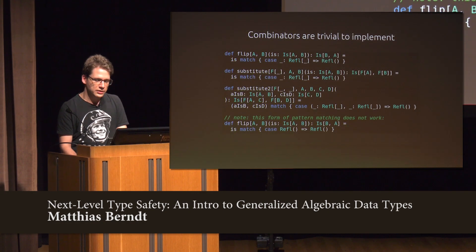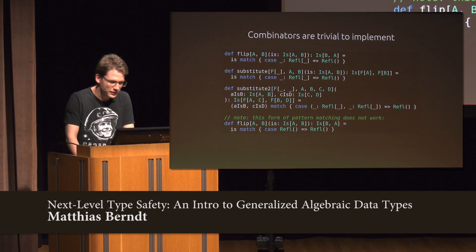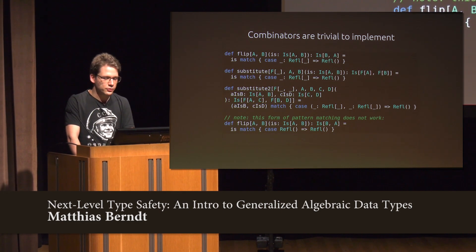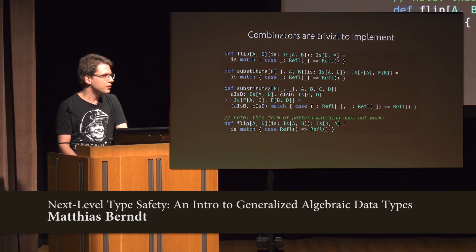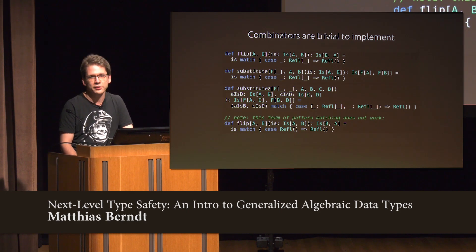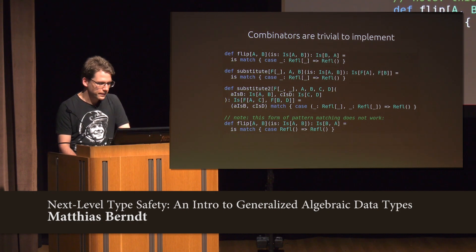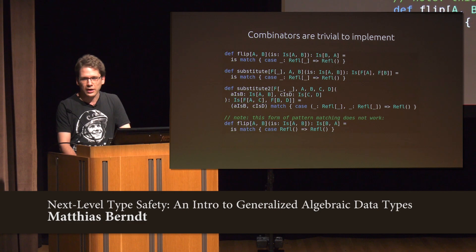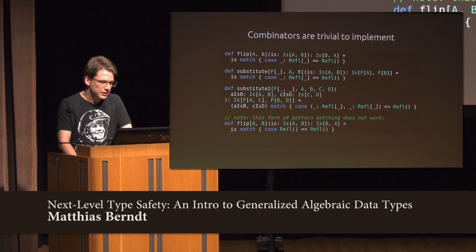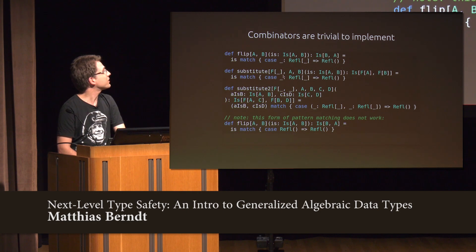Now we can implement all the combinators I mentioned earlier. I can implement 'flip': if A is B, then B is A. I can implement 'substitute': if A and B are the same, then F of A and F of B are the same. There's also a third variant that works the same as substitute but for binary type constructors. One warning: if you want to try this yourself, watch out for the syntax at the bottom — I believe that is a Scala compiler bug. You always have to use the pattern matching syntax with the colon; the other form is not going to work.